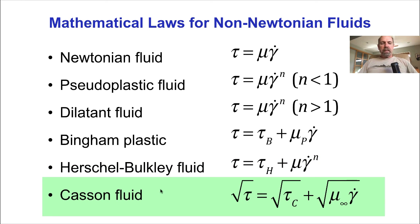But the equation that works best for whole blood was first developed for printer's ink, and is called Casson's equation, in which the square root of the shear stress is equal to the square root of the yield stress plus the square root of the viscosity times the shear rate.